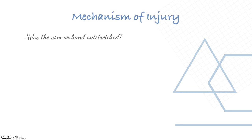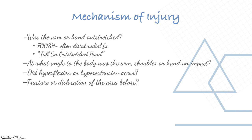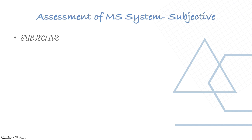Consider mechanism: was the arm or hand outstretched — FOOSH, meaning fall on an outstretched hand — which often causes a distal radius fracture. At what angle to the body was the arm, shoulder, or hand on impact? Did hyperflexion or hyperextension occur? Was there fracture or dislocation? Was the patient involved in rigorous athletic training?